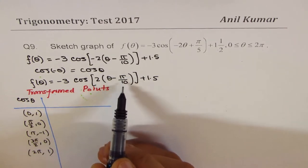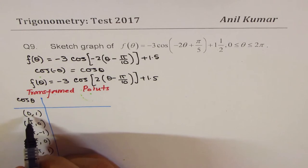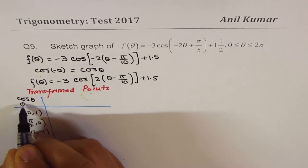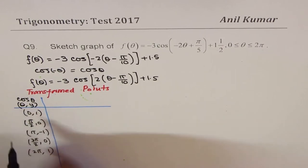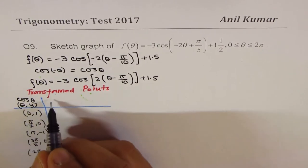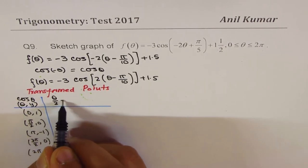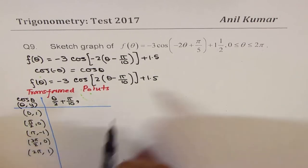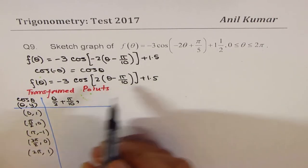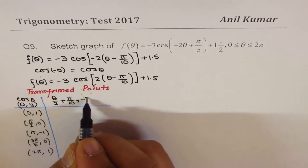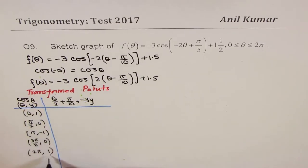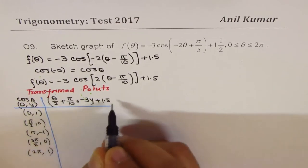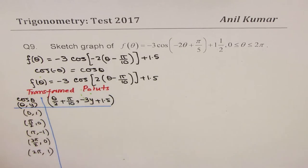The x-values, which are the θ-values, become θ divided by 2, and then you add π/10. As far as the y-values are concerned, you multiply by -3 and then add 1.5. This gives new coordinates — the image points.